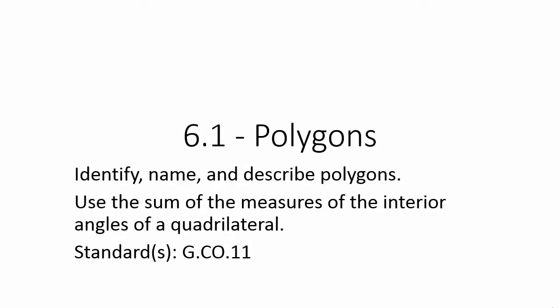Hi, everyone. In today's lesson, we are looking at Chapter 6, Section 1, Polygons. Our objectives are to identify, name, and describe polygons, and use the sum of the measures of the interior angles of quadrilaterals. Our standards are GICO 11.